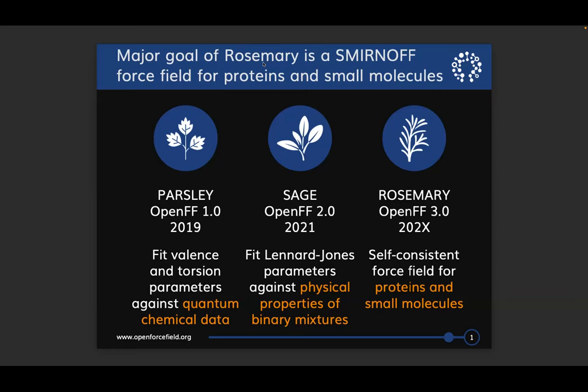By self-consistent, what I mean is that we should be assigning parameters based on chemistry. That is, if we have a functional group like a primary alcohol next to an amide bond, that should receive the same parameters no matter how we label that molecule, whether it's in a small molecule drug or in a protein side chain.